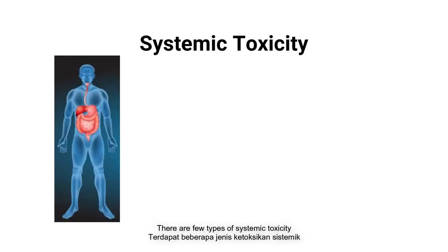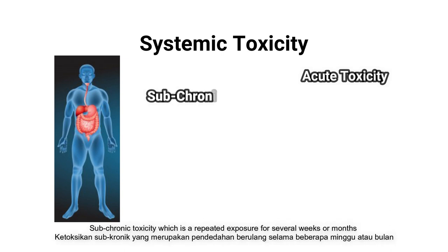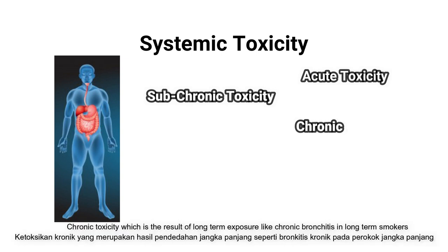There are a few types of systemic toxicity. Acute toxicity is a single dose received within less than 24 hours. Subchronic toxicity is repeated exposure for several weeks or months, and is known as the common exposure pattern for some environmental agents. Chronic toxicity is the result of long-term exposure, like chronic bronchitis in long-term smokers.